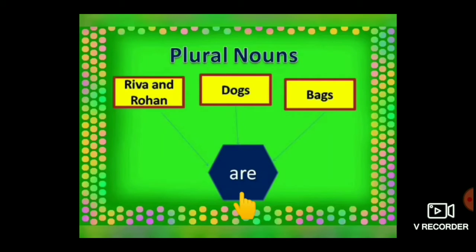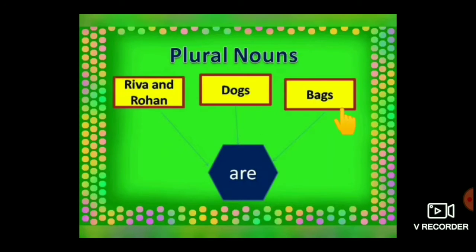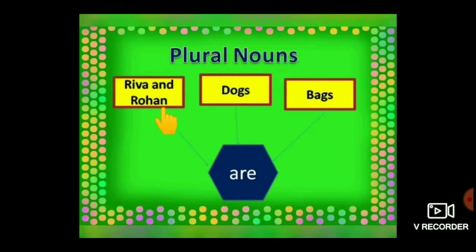Next, ARE. We use ARE when the subject is plural. Plural nouns mean more than one. Like Riva and Rohan, Dogs, Bags — Riva and Rohan are, Dogs are, Bags are. Observe here: more than one person, more than one dog, more than one bag. That's why we use ARE.